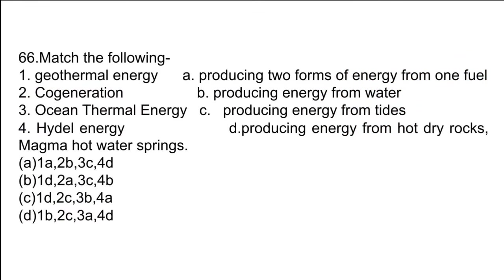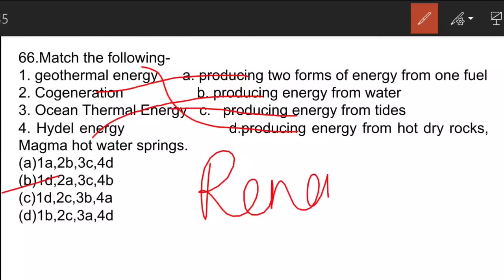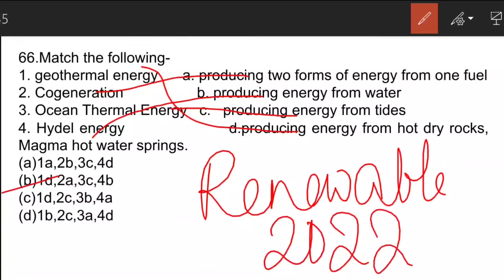The next matching question on energy types: geothermal energy is producing energy from hot, dry magma and hot water springs. Co-generation is producing two or more forms of energy from one fuel. Ocean thermal energy is producing energy from tides. Hydral energy is producing energy from water. Option B is the correct answer. India has a target of 175 gigawatt of renewable energy by 2022: 100 GW from solar, 60 from wind, 10 from biopower, and 5 from small hydropower.